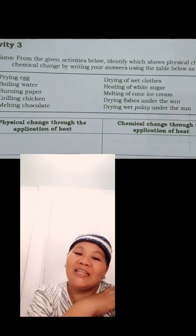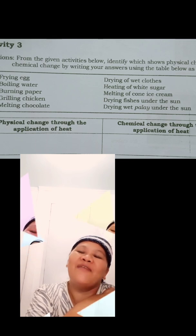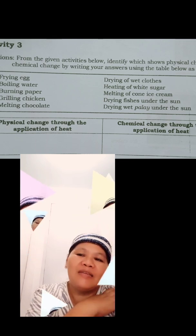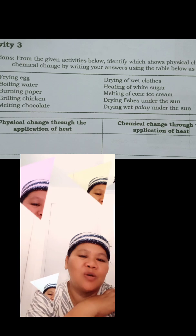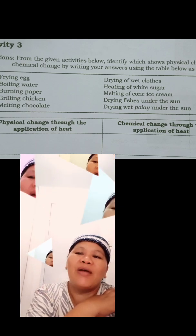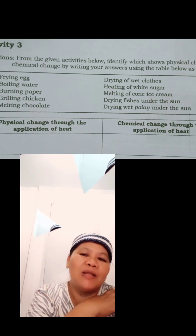Number 5: What process is applied in the melting of ice cream, drying wet clothes, and cooking vegetables that results in physical and chemical change? A. Boiling, B. Drying, C. Freezing, D. Heating. Activity 3. Directions: From the given activities below, identify which shows physical change or chemical change by writing your answers using the table below as a guide.